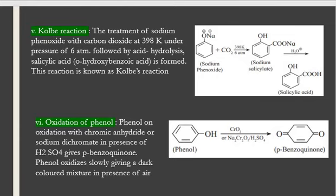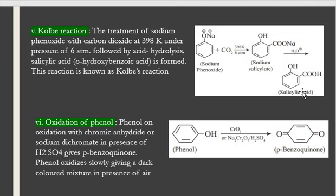The Kolbe reaction is another method to prepare salicylic acid. Treatment of sodium phenoxide with carbon dioxide at 398 Kelvin under a pressure of 6 atmospheres, followed by acid hydrolysis, gives salicylic acid. Sodium phenoxide reacts with CO2 at 398 Kelvin and 6 atmospheric pressure; a COO⁻ group is obtained at the ortho position, and on further hydrolysis salicylic acid is formed.